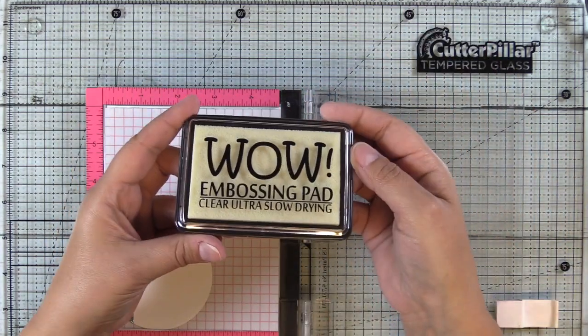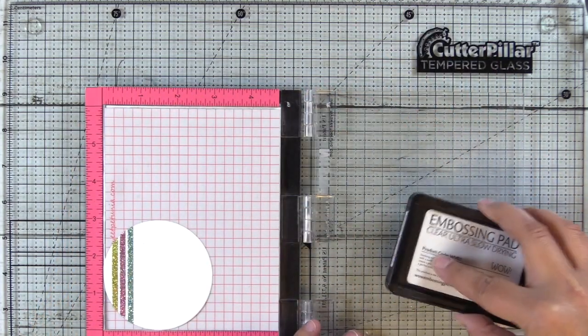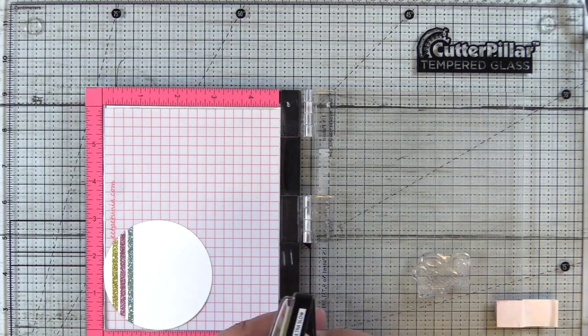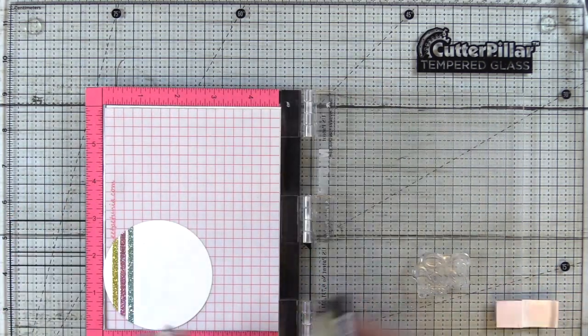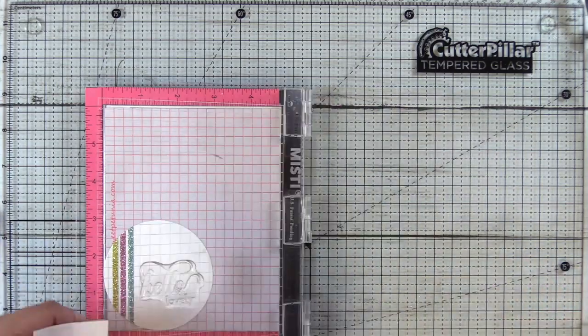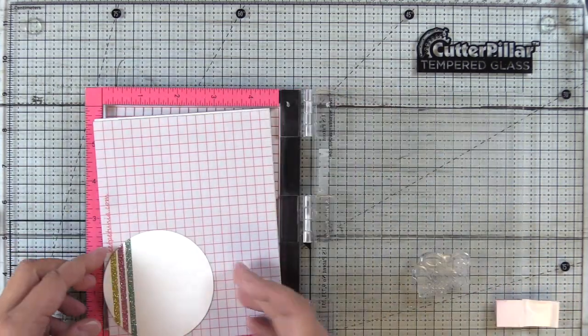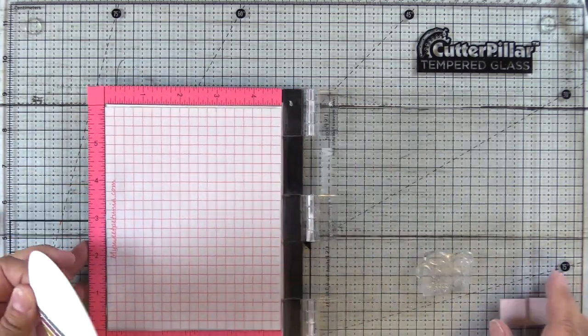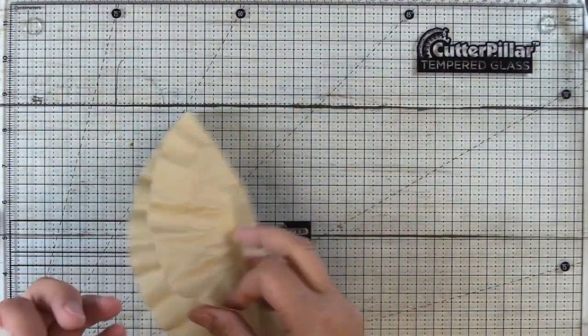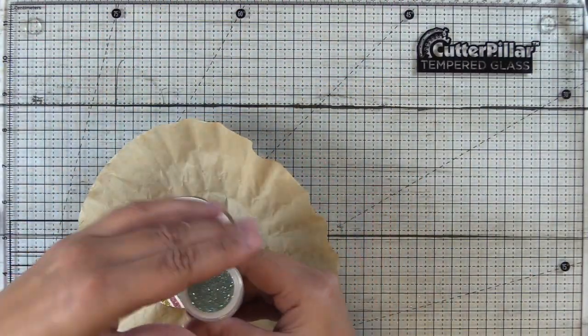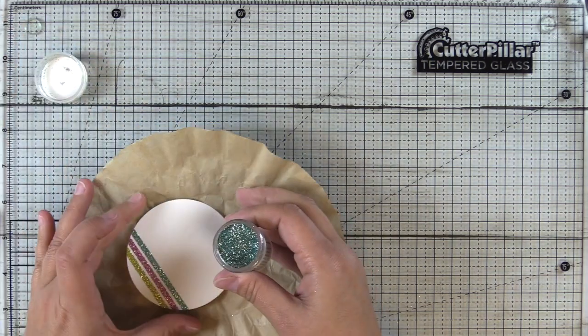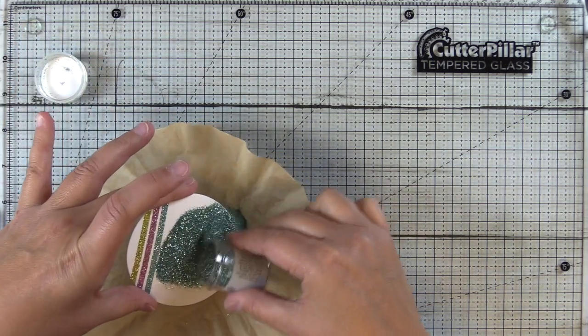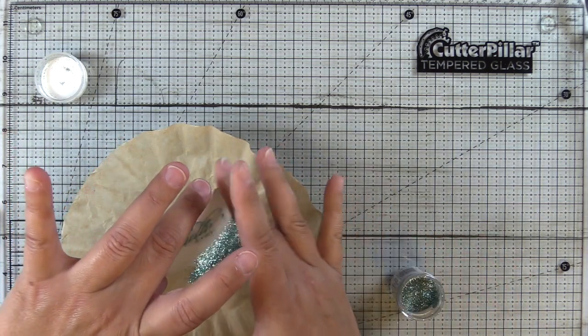So using the WOW clear ultra slow drying ink pad, I'm going to ink up the hello lovely stamp here. And I like to ink mine up twice. I like to be able to see the impression of the stamp. It just makes me feel better. You probably can just do it once. And then of course I'm going to shake up my container and then sprinkle it on to the embossing ink.